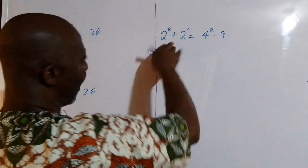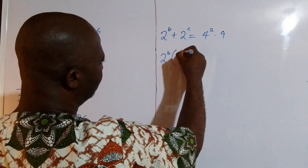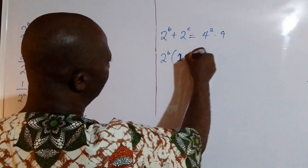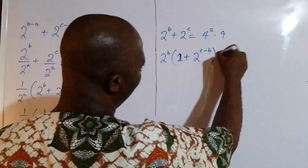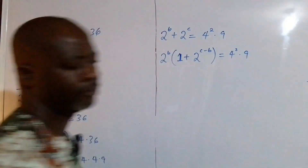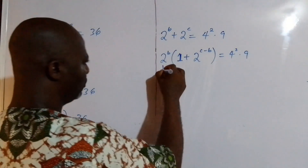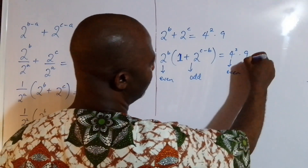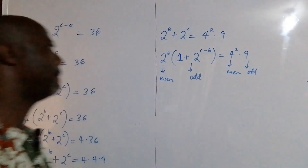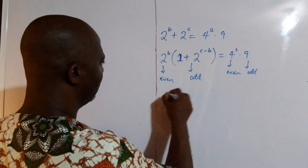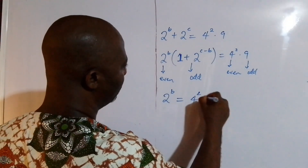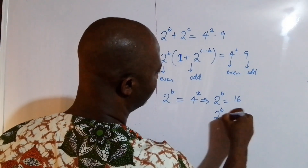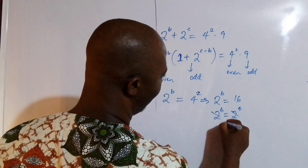Now we go ahead and factor out 2^B. This gives us 2^B times (1 plus 2^(C−B)) equals 4 squared times 9. The factor 2^B is even and (1 plus 2^(C−B)) is odd. Comparing even with even: 2^B equals 4 squared equals 16, which is 2 to the power of 4. So B equals 4.